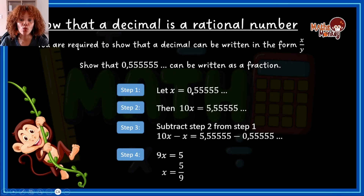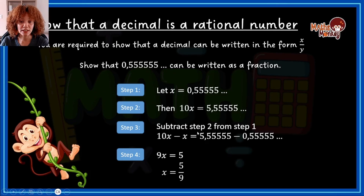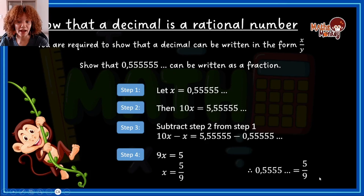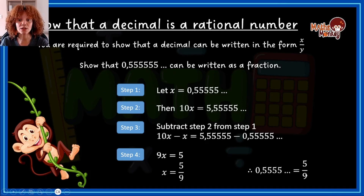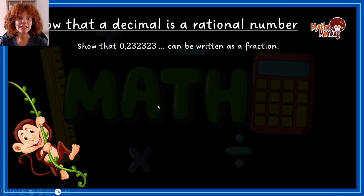So subtracting step one from step two gives us 5 over 9. That means 0.555... in fraction form equals 5 over 9. You can check this on your calculator — type in 0.555, press equals, then press the fraction button and it should show 5 over 9. However, if asked in a test, you can't just give the answer — you have to show all four steps.